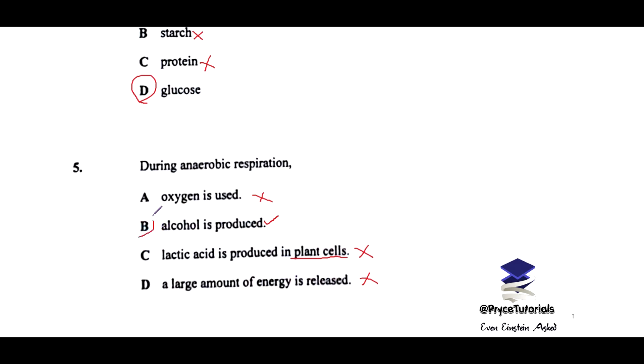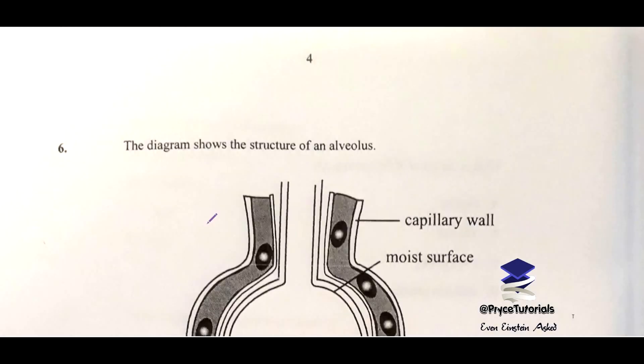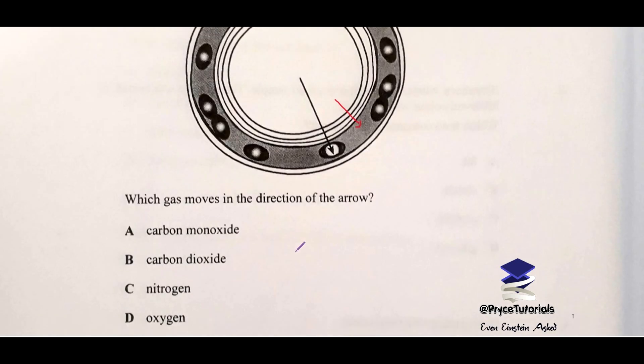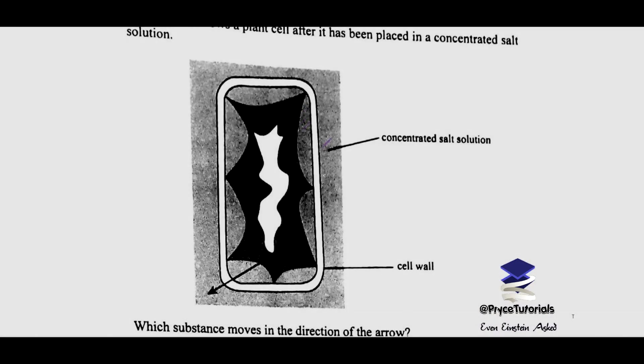The diagram shows the structure of an alveolus. So you have the diagram, maybe just study it. We have the capillary wall, we have a moist surface, and then we have an arrow directing straight into this red blood cell. Typically you have oxygen going in and carbon dioxide moving out. So which gas moves in the direction of the arrow? Carbon dioxide? No, we want oxygen here. Oxygen diffuses into the system, going to the red blood cells.